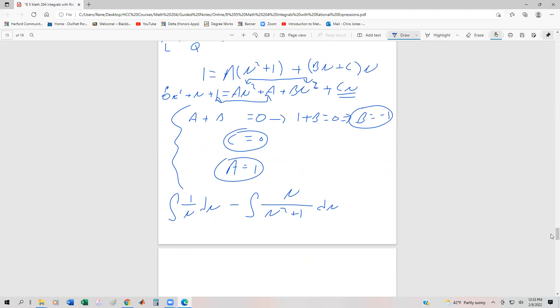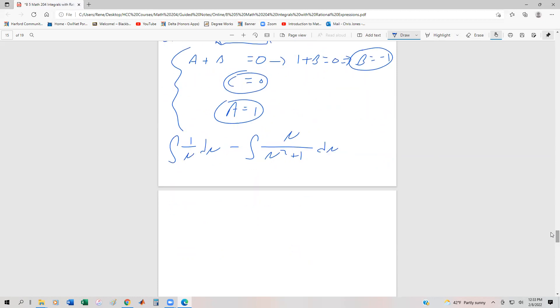but a u substitution looks a little better. We've already used the letter u. So I'm going to call A equal to u squared plus one. dA is going to be equal to 2u du, which is helpful because we have u and du. So dA over two is going to be u du.